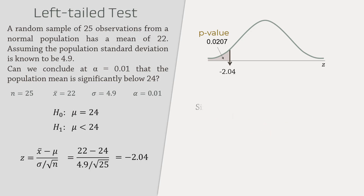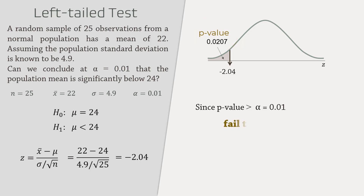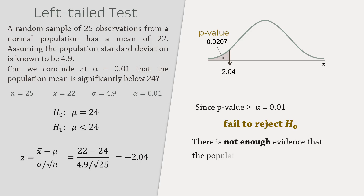Since our p-value is greater than alpha of 0.01, we will fail to reject the null hypothesis. Consequently, there is not enough evidence to conclude that the population mean is less than 24 at alpha equals 0.01.